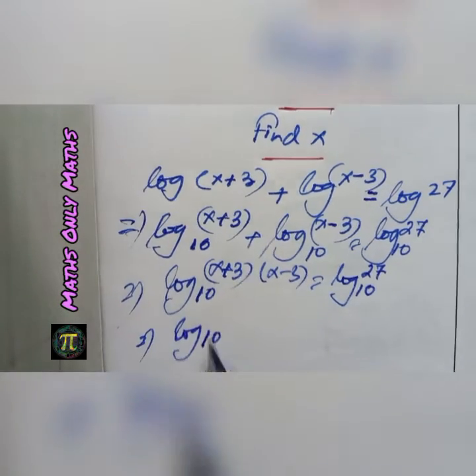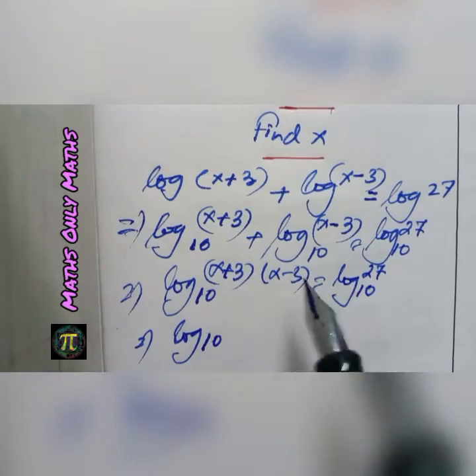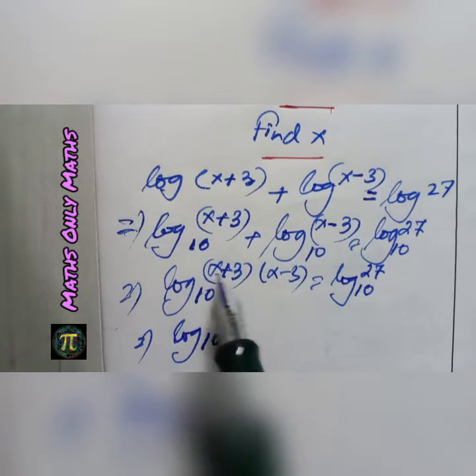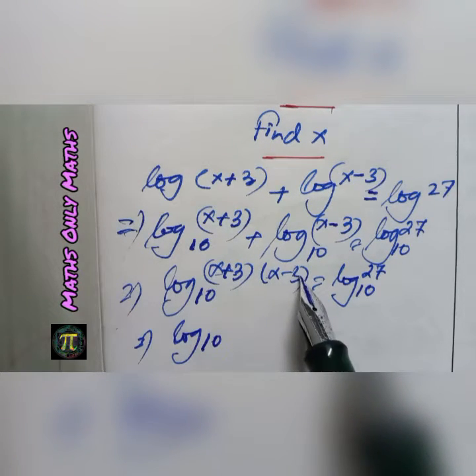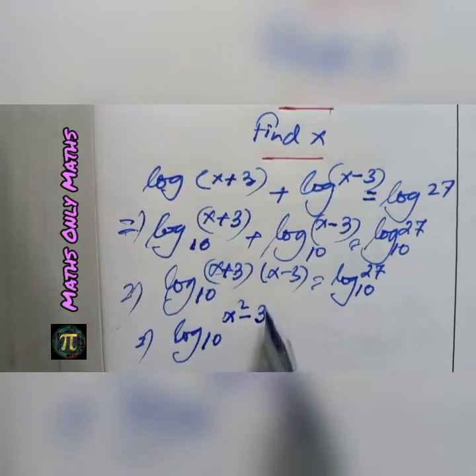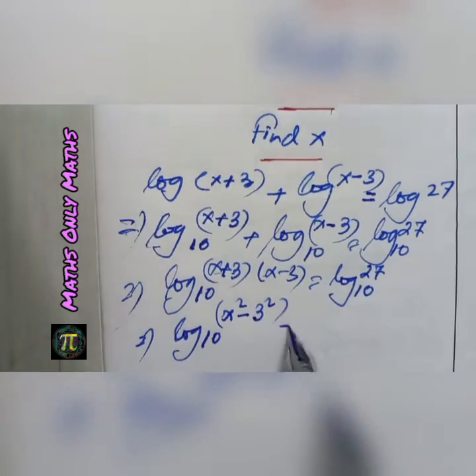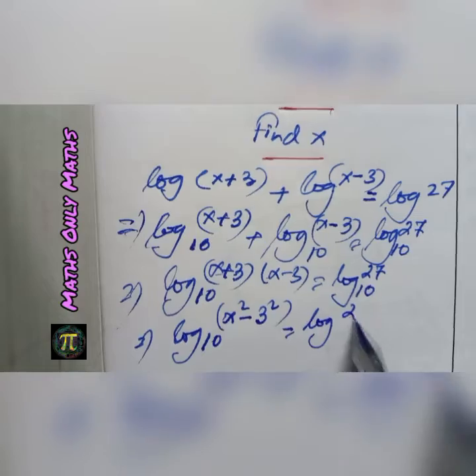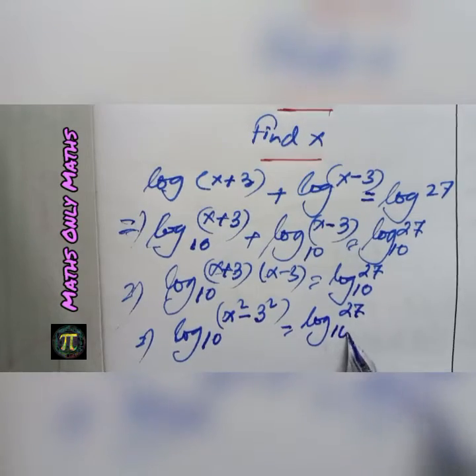Now, (x+3) multiply (x-3). a plus b multiply a minus b is a square minus b square. x square minus 3 square equals log 27 to the base 10.